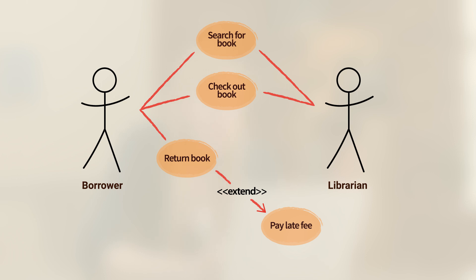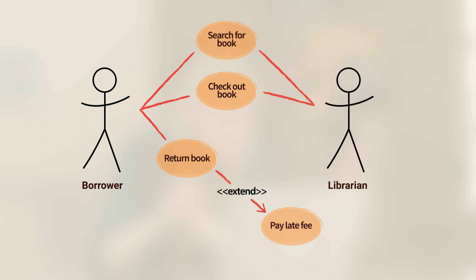Let's translate this to actual words. What does this extend mean here? This means that the system will assess the late fees automatically. Sometimes you can have a book that's returned without late fees being assessed, but you can't have late fees being assessed without that first use case in play. You can't have late fees assessed if somebody didn't actually return a book.